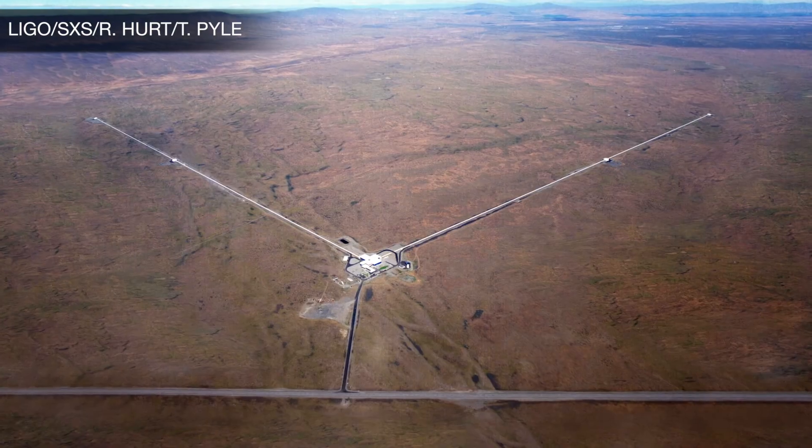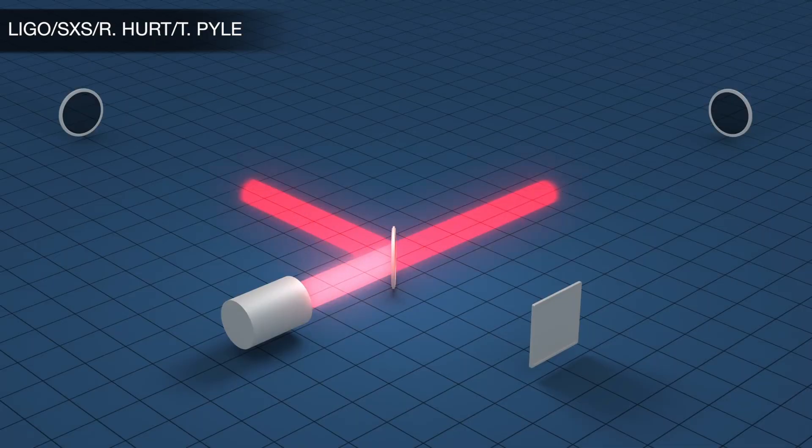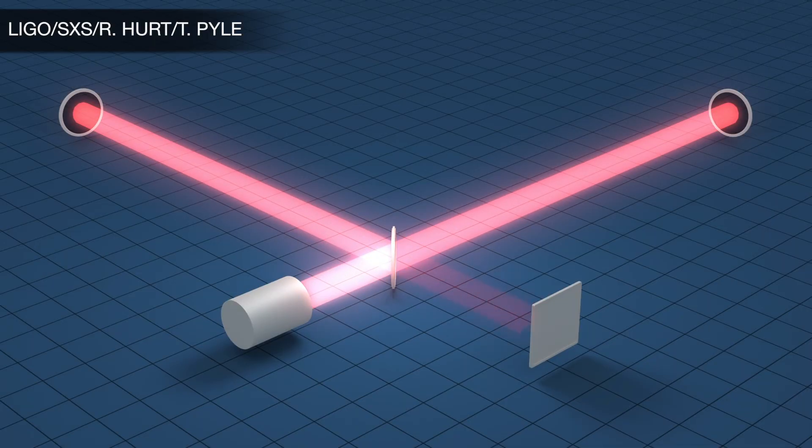The technology had to come so far for this to be possible. Check it out. In the LIGO detector you've got two vacuum tunnel arms with lasers that go back and forth reflecting off of mirrors on the other end.